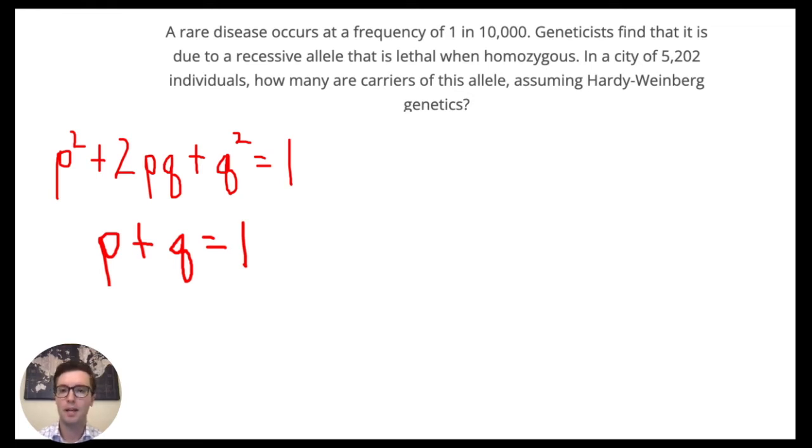We know from this question stem that a particular disease is occurring at a frequency of 1 in 10,000, and that happens when the recessive allele is homozygous. When that recessive allele is homozygous, that means there's two of them, so two of the q's, q squared. So we know that q² is occurring at a frequency of 1 in 10,000.